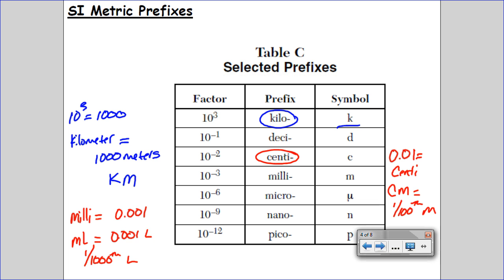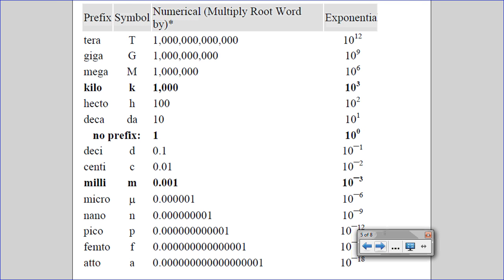The main ones that we're focusing on here this year and the conversions are centi, milli, and kilo. Those are the units you're going to run into most often. Here's some other numerical conversion factors. What I would like to write in the middle here is: